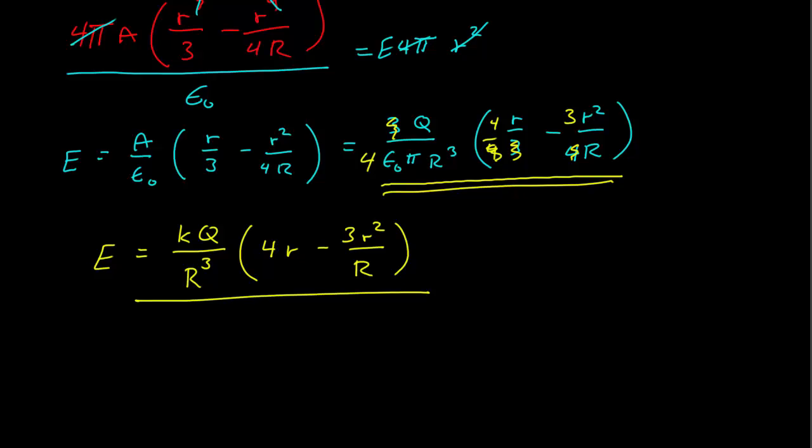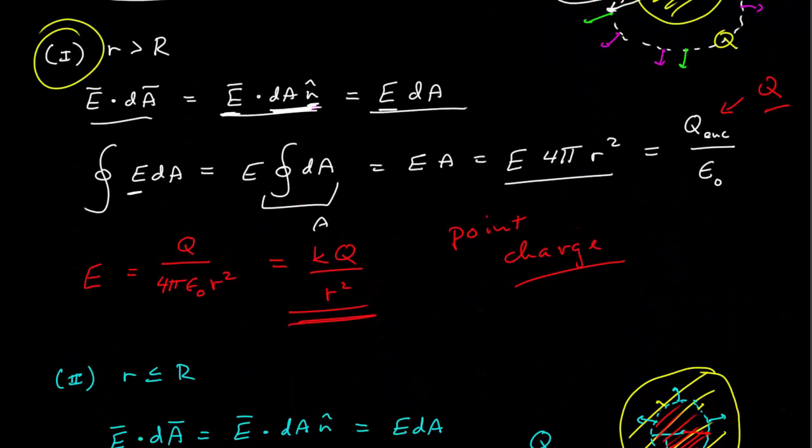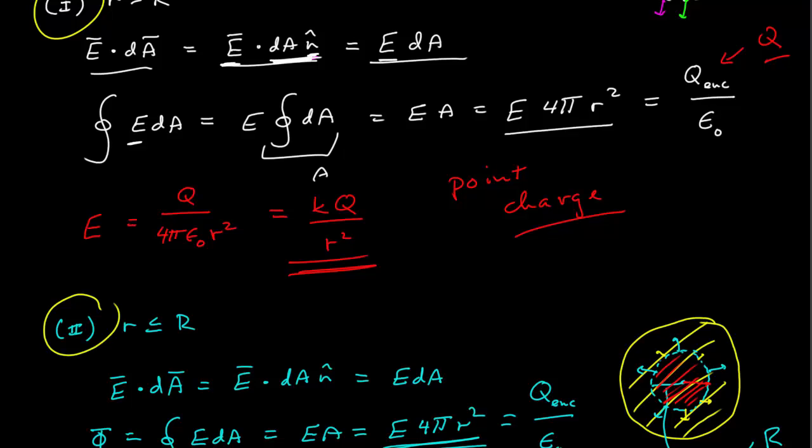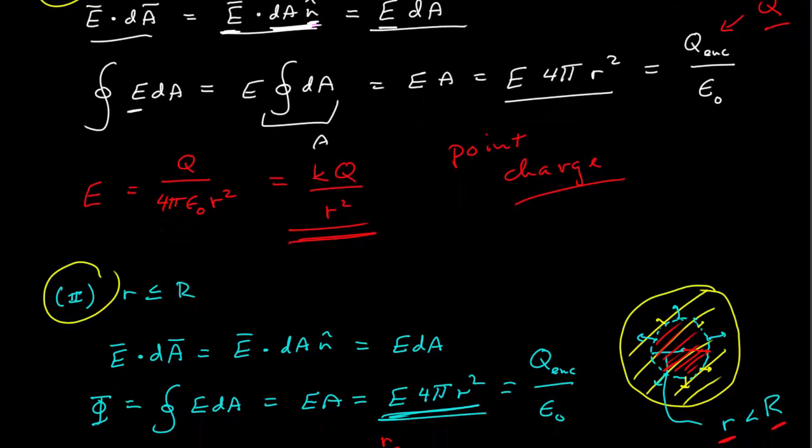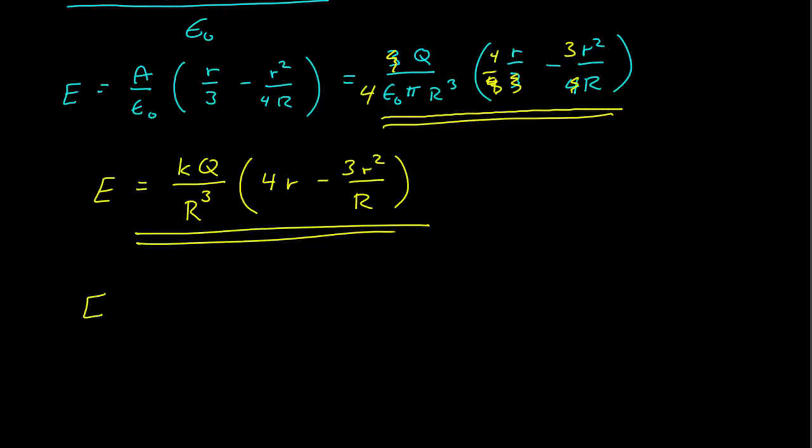The one thing we do need to do, and this is a very important check, you always do this when you have this type of problem. We calculated the electric field in two regions of space, one where it's greater than R, and the other where it's less than or equal to R, and the check that you always make when you do this sort of thing is you verify that these two are equal at the electric field equal to R. So if I plug R into this one, I get KQR cubed 4R minus 3R, right? If I put a capital R in here, I cancel one of them.